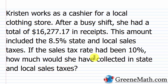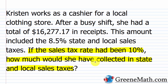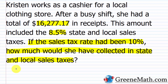If the sales tax rate had been 10%, how much would she have collected in state and local sales taxes? To attack this problem, it's very simple. You have two amounts to work with: the $16,277.17 in receipts, and the 8.5% state and local sales taxes. She has this amount in total receipts, which included the state and local sales tax. So you have a pre-tax amount of goods sold, plus the taxes collected, and when you sum these two amounts together, you get $16,277.17.